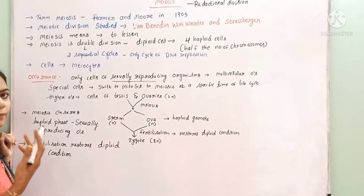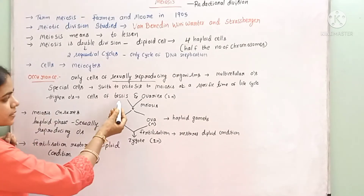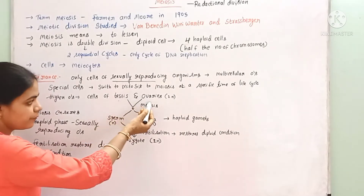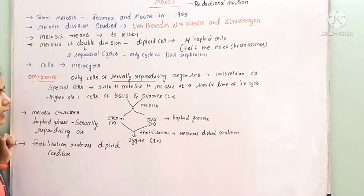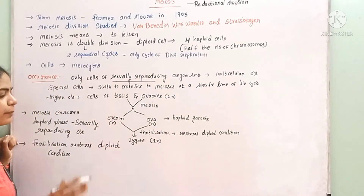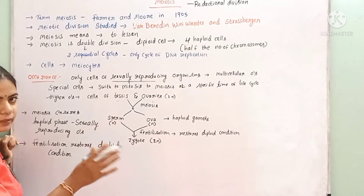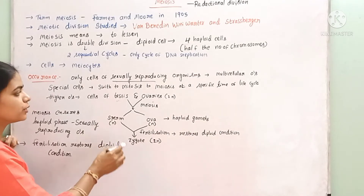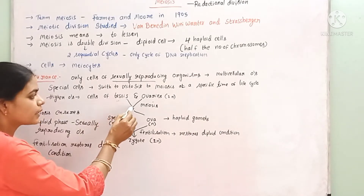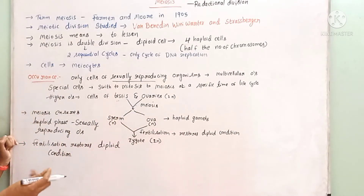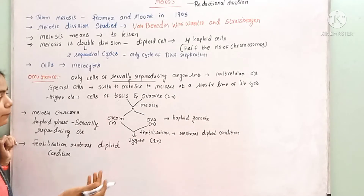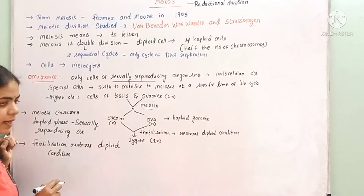For example, in human beings, the sexual organs are the testis in males and ovaries in females. These cells are in diploid condition — they contain one set of chromosomes from the mother and one set from the father. At a specific time, the cells in the testis and ovaries switch and start the meiosis process.